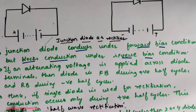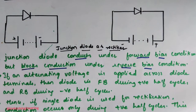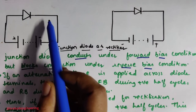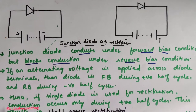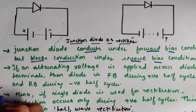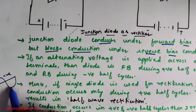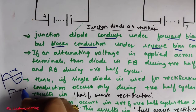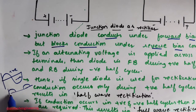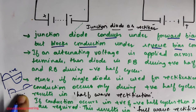If one single diode is used for rectification, conduction happens only in the positive half cycle, resulting in half wave rectification. For a general sinusoidal wave with positive and negative regions, half wave rectification means the diode acts only on the positive half — the negative part has no conduction. So for a single diode, only the positive half cycle conducts, and you get a half wave output.